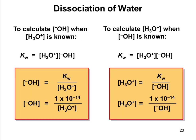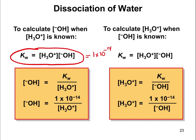The only equation you really need to know is Kw = [H₃O⁺][OH⁻] = 1×10⁻¹⁴. You can rearrange it: [OH⁻] = 1×10⁻¹⁴ / [H₃O⁺], or [H₃O⁺] = 1×10⁻¹⁴ / [OH⁻]. That's simply rearranging the Kw equation.